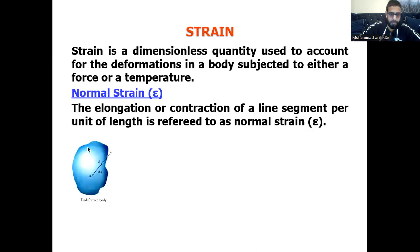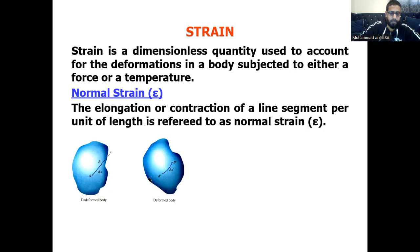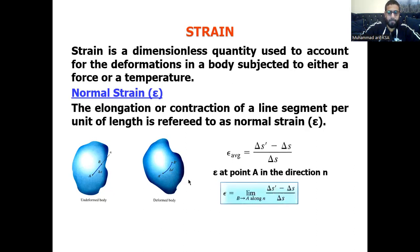Normal strain is the elongation or contraction of a line segment per unit length, referred to as normal strain. Suppose we have an undeformed body with segment AB. The initial length is delta S, and after deformation the changed length is delta S dash. Normal strain is the change in length — final length minus initial length — divided by original length.